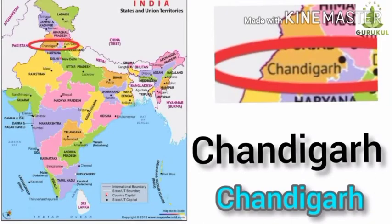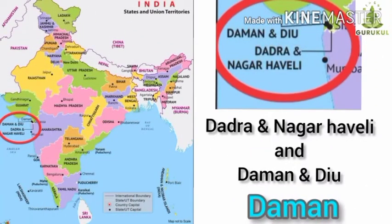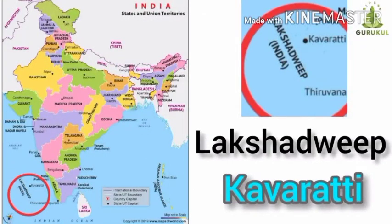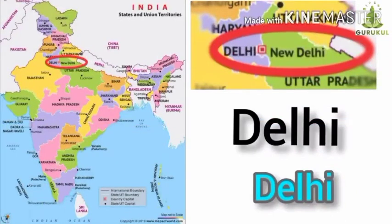Second, Chandigarh — the capital of Chandigarh is itself. Third, Dadra and Nagar Haveli and Daman and Diu — both union territories have become a single union territory since 26th January 2020, and the capital of it is Daman. Fourth, Lakshadweep — capital is Kavaratti. Fifth, National Capital Territory Delhi — and the capital is Delhi itself.